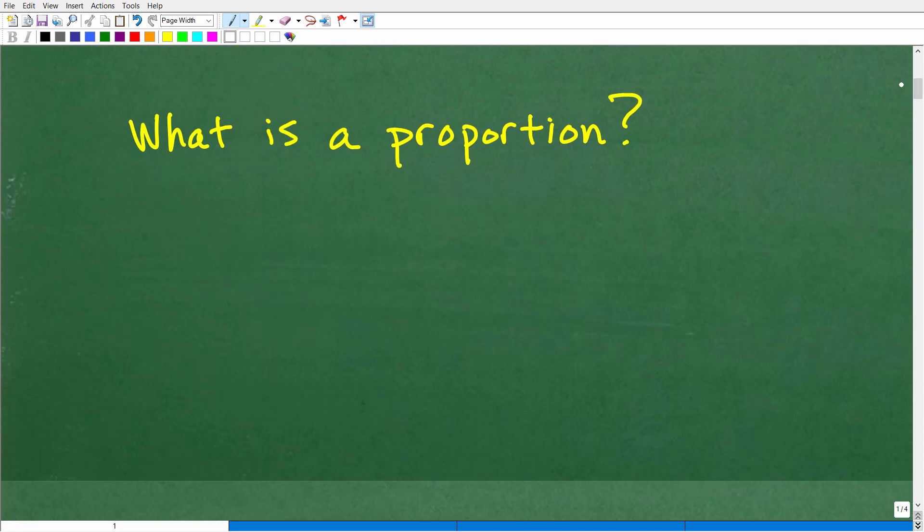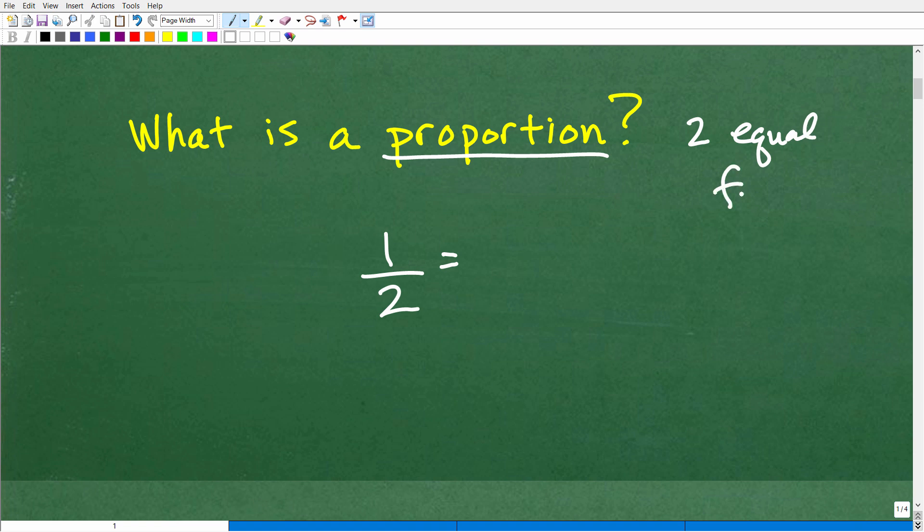Okay, what is a proportion? Well, basically, a proportion is nothing more than two equal fractions. So let's look at a fraction. One half is a nice fraction. Now if I'm saying a proportion is two equal fractions, let's do this little experiment. I have one half. This is one fraction. Can you think of another fraction that's equal to one half?